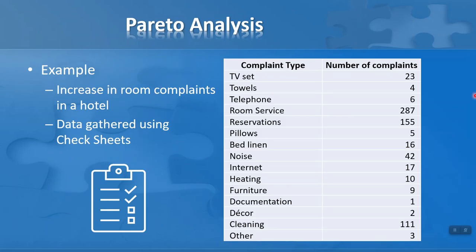Let's take a look at an example to show how the Pareto principle can help us in our problem solving. In this case, I've recorded some data using check sheets on different types of complaints occurring in a hotel. We can see the number of complaints — let's say over a period of a month or a quarter — recorded on the table on the right hand side. We don't need to be a genius to figure out that room service, followed by reservations and cleaning, are the three highest numbers of complaints overall and would clearly need to be tackled first. But let's put some structure on identifying these as the priorities for improvement.